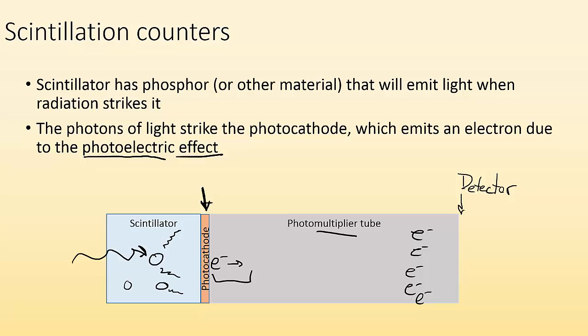which can then be detected more easily at the end by the detector. So that's why we call it a multiplier tube. It's causing that signal to get multiplied. Again, I'm not going to go into how it does that, because that deserves its own video in and of itself. But that's the big idea. Scintillation counters. The radioactivity causes light to be emitted, and that light we can use to make an electrical current that we can measure and count.